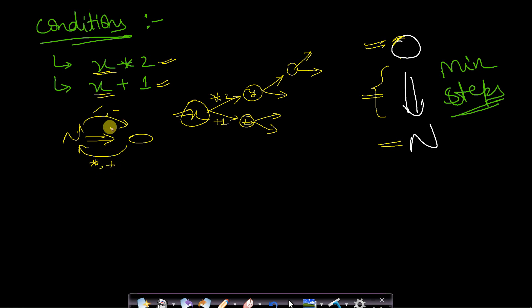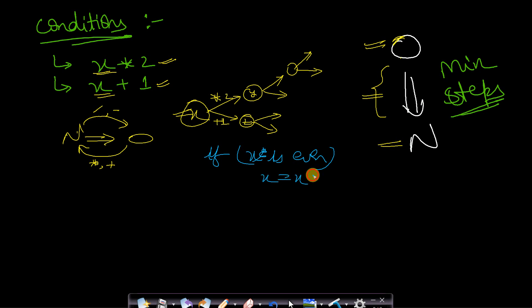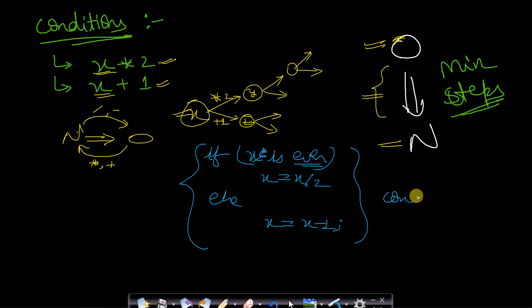Here is the approach: if the number at any instant x is even, then x = x / 2; otherwise if it's odd, x = x - 1. Whenever you do this operation, increment count by 1. At the end, return count — that will be the minimum number of operations required to convert 0 to n or n to 0.